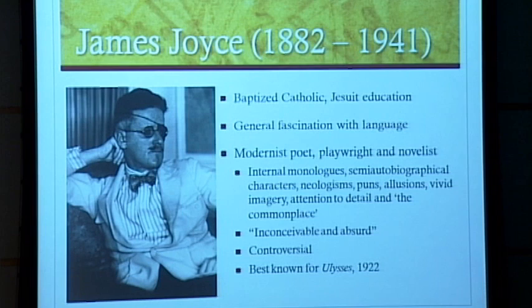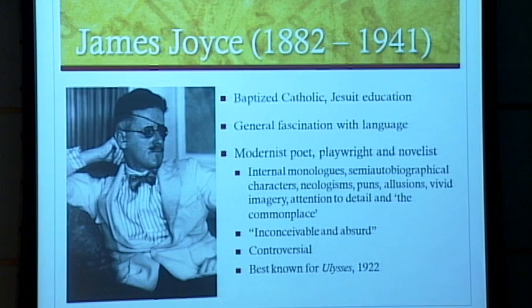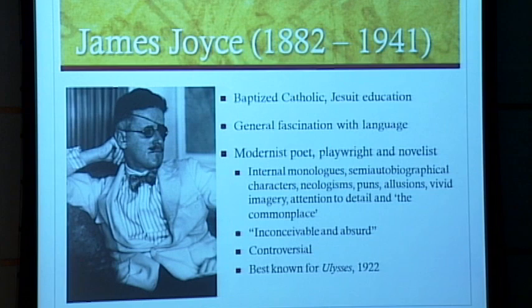Joyce became a poet, playwright, and novelist who wrote with a really revolutionary modernist style. He had all these devices — the most famous being the internal monologue, which you've probably heard of as the stream of consciousness, where people just say everything that comes to mind. He also uses a lot of puns, coins new words, has allusions all over the place, and vivid imagery. It's really dense and can be hard to read, but it's rich material. One of his best friends described his work as 'inconceivable and absurd,' so there are definitely challenges. A lot of his work is controversial because of these stylistic elements.